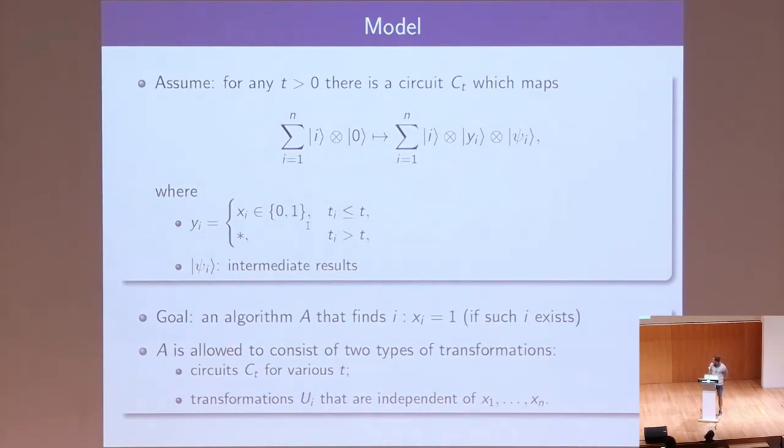Our goal is to construct an algorithm which finds one of the solutions or declares that no such solution exists. We will allow this algorithm to consist of two types of transformations: either these checking circuits for different times t, or some intermediate unitaries that do not depend on the answer for bits x. For simplicity, we will assume that only these checking circuits matter for complexity. The complexity will be the total time spent by running these checking circuits, and these intermediate unitaries are free of charge.